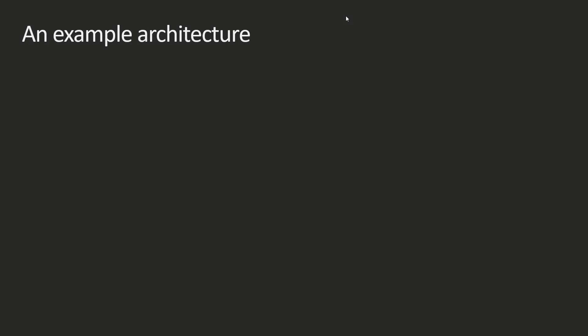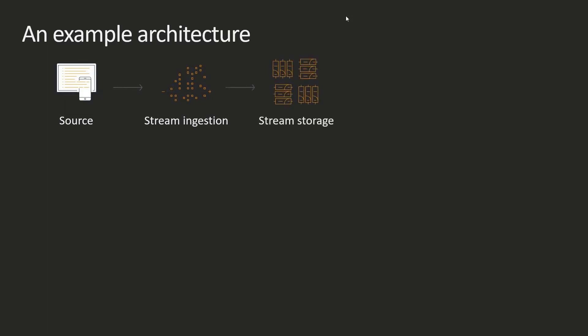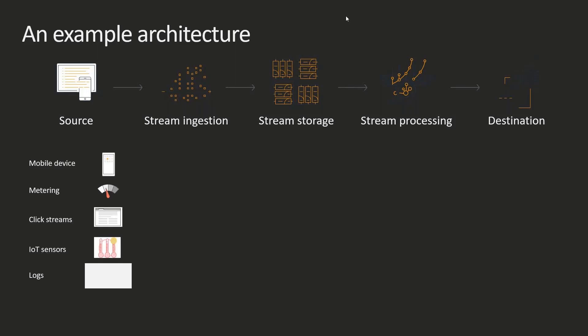Having looked at stream processing and the benefits it offers businesses, let's look at an example architecture and go over more details around specific customer use cases made possible by stream processing. We'll look at each of these layers and provide some possible approaches for source, stream ingestion, stream storage, stream processing, and the destination.